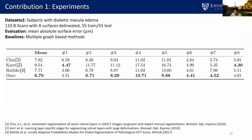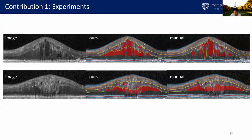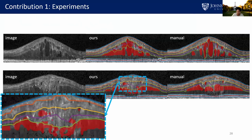We also validated on subjects with diabetic macular edema, where large lesions exist. The dataset contains 110 B-scans with 8 surfaces and lesions delineated. We compared with 3 graph-based methods and reached state-of-the-art surface segmentation accuracy. For images with large lesions, designing a graph with varying constraints is hard, but without graph post-processing, a pixel-wise labeling network can easily fail. In our method, even with large lesions or missing surfaces, a layer surface is still produced to maintain continuity, smooth and topologically correct. Lesion segmentation dice is similar to state-of-the-art, and surface segmentation is excluded from further analysis at lesion areas.